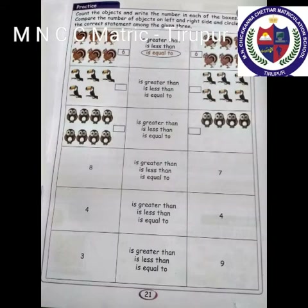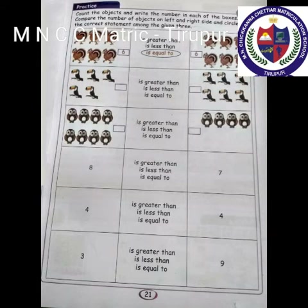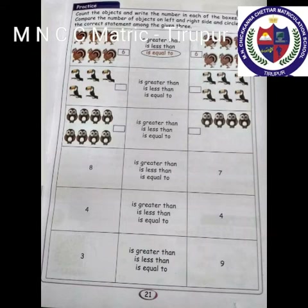Count the objects and write the number in each of the boxes. Compare the number of objects on the left and right side and circle the correct statement. First picture: there are 6 birds on each side. Therefore, 6 is equal to 6 — circle 'is equal to.' Next picture: there are 5 birds on one side and 6 on the other. Therefore, 5 is less than 6 — circle 'is less than.'